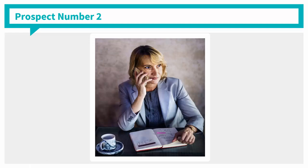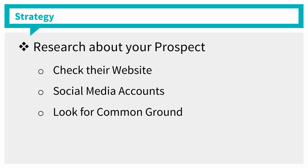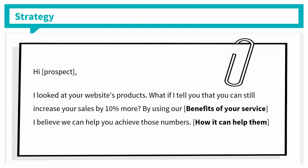Prospect number two: prospects who are too busy to respond. These prospects might be aware of your product and the solution it can offer, but they are too busy with their lives to reply to your message. So do some research about your prospect — check their website and other social media accounts, and look for common ground to mention in your follow-up message. For example: 'Hi [prospect], I looked at your website's products. What if I tell you that you can still increase your sales by 10% more by using our [service]?' Then mention the benefits and how you can help them.